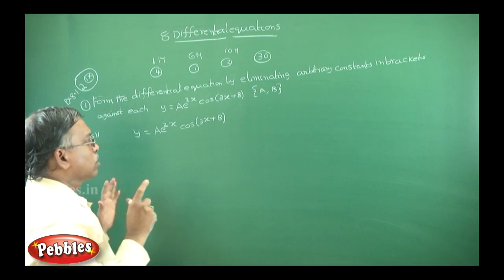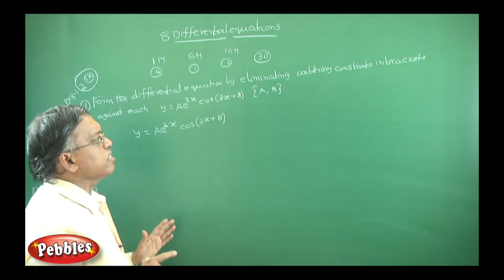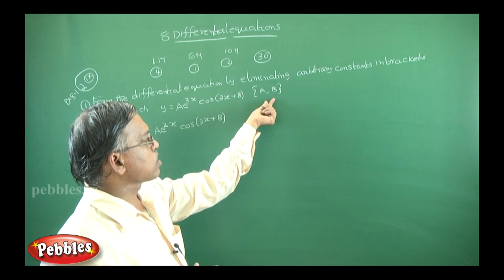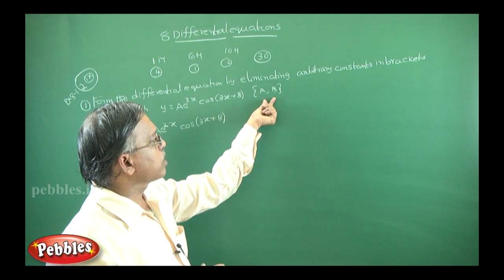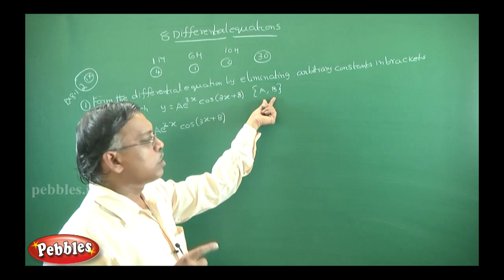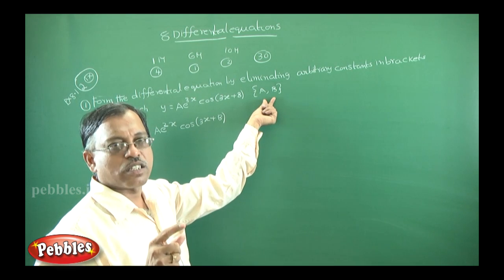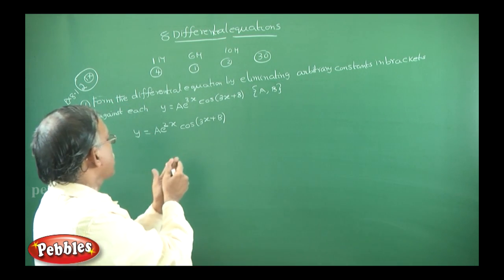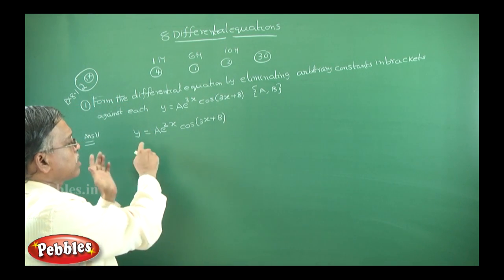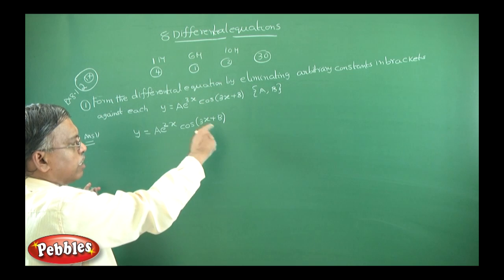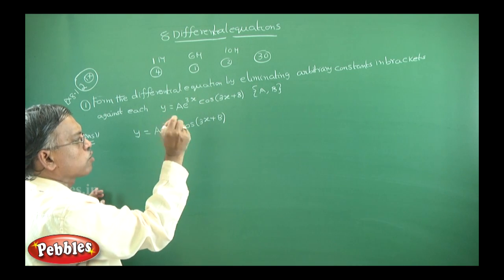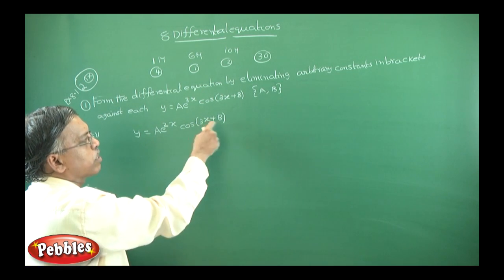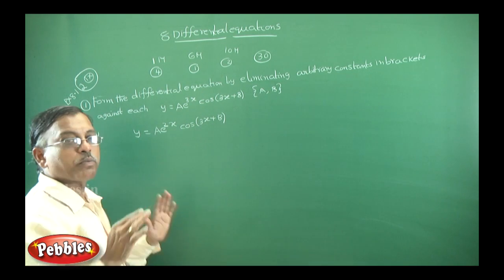The procedure is: first, see how many arbitrary constants are given — here they gave two. So you have to differentiate this equation two times and eliminate both a and b. That is the procedure.